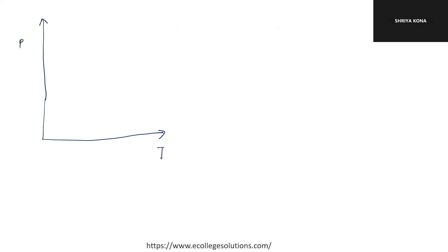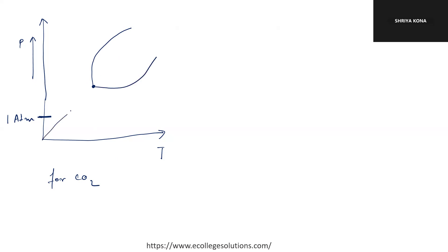So this is pressure and this is temperature. Let's say that here is one atmospheric pressure — above this line the pressure is higher. If you look at the phase diagram for CO2, you will find that the triple point is located at a high position. This is solid, this is gas, this is liquid. The triple point is that special point, and this line going from solid to liquid represents the melting process, while going downward represents freezing from liquid to solid.